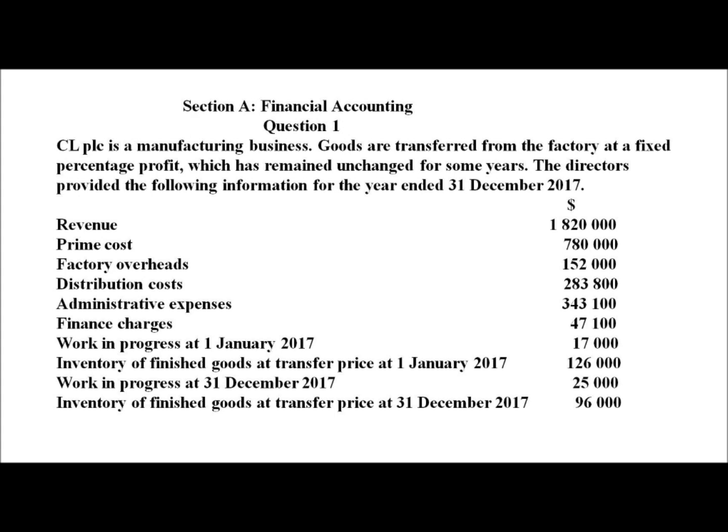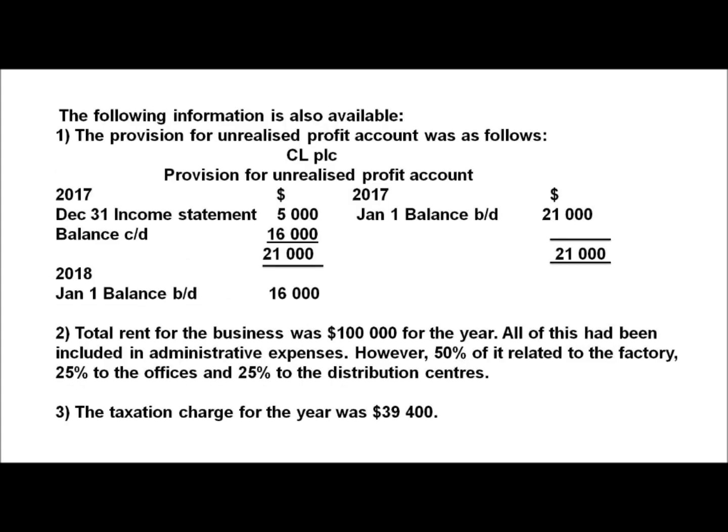Question 1 states about a manufacturing business which transfers its finished goods from manufacturing to the final accounts at a markup percentage which has been fixed for some years. It gives us further information about sales revenue, prime cost, factory overheads, distribution costs, administrative expenses, financial charges, opening and closing work in progress, and opening and closing inventory. In addition, it provides information about the provision of unrealized profit account, how rent should be distributed, and the tax charges for the year.